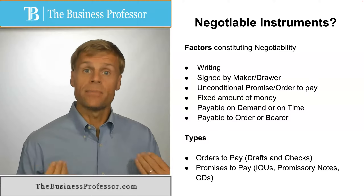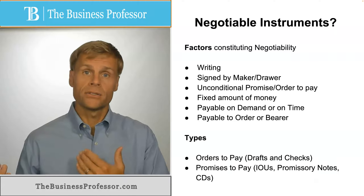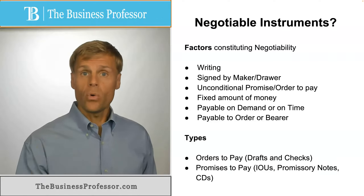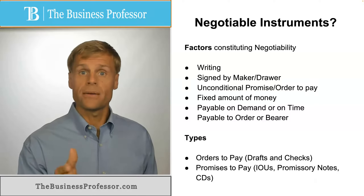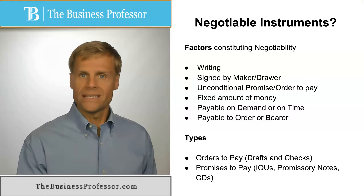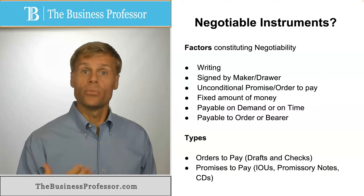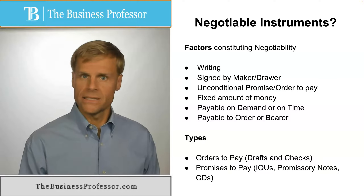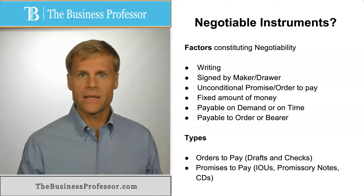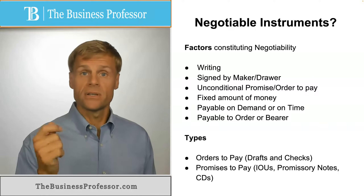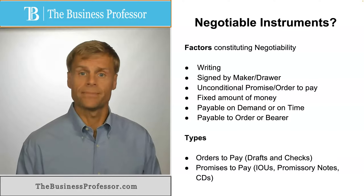Lastly, the instrument needs to be payable to order or payable to bearer. Payable to order means it is payable to a specified person or individual who is named in the instrument. Payable to bearer means payable to someone who holds the instrument — not a specified person, just simply a holder of the instrument who can present it for payment.